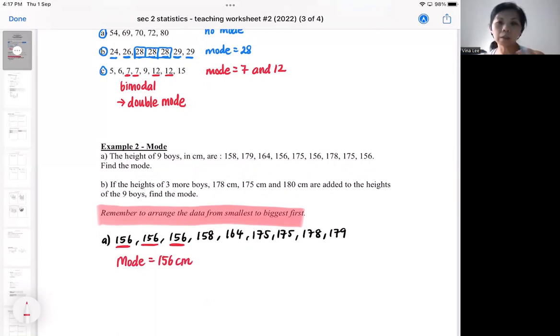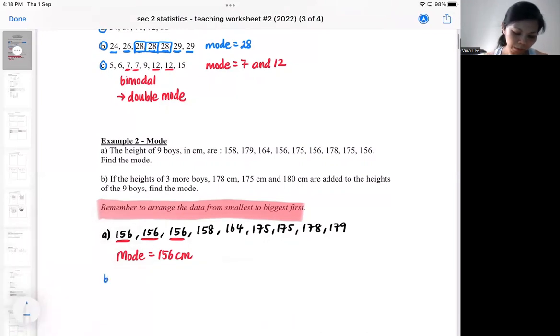But if you arrange your data, you also need to check whether you miss out data or not. If there are nine datas, because there are nine boys, you do some counting, make sure you have nine data after arranging. That's where a careless mistake can happen. After arranging, we're going to add on three more boys. We're going to add in three more boys: 178, 175 and 180. Where will you insert the 178? The 178 will be here, the 175 will be here, and the 180 will be at the back.